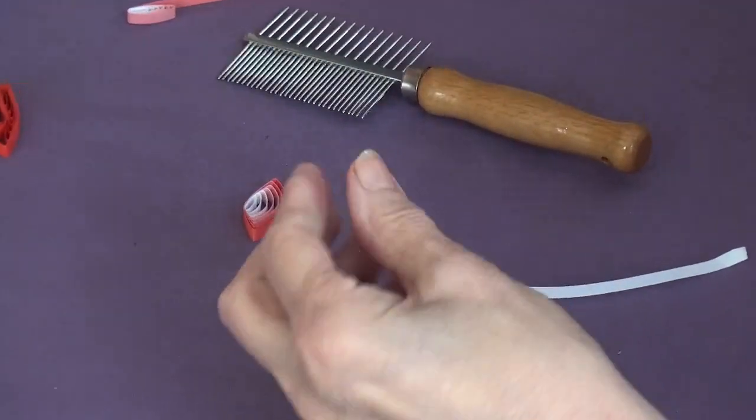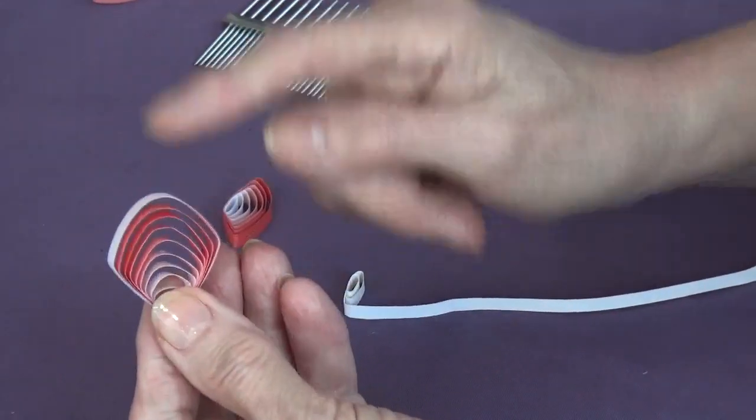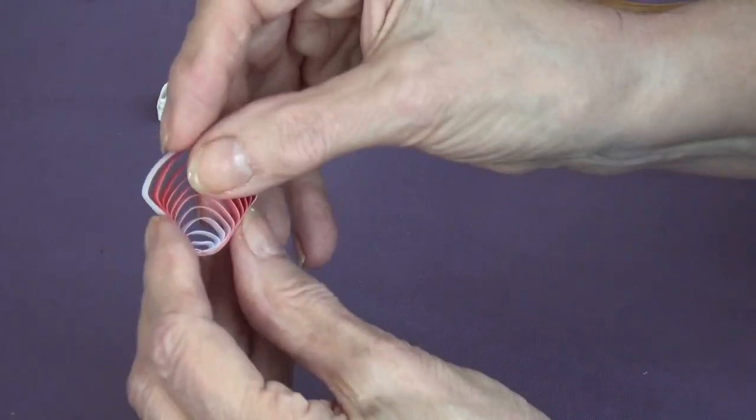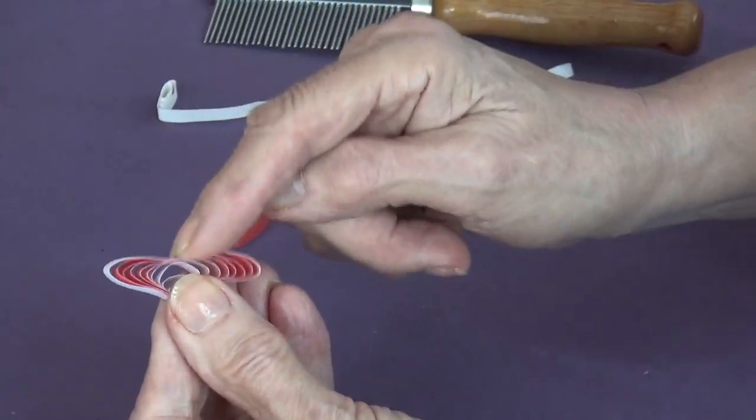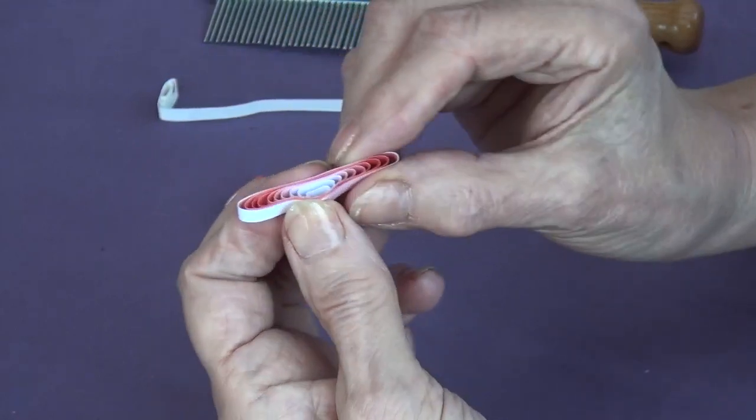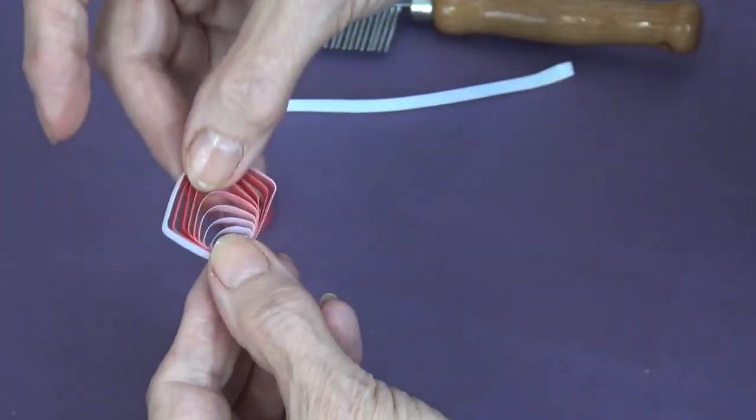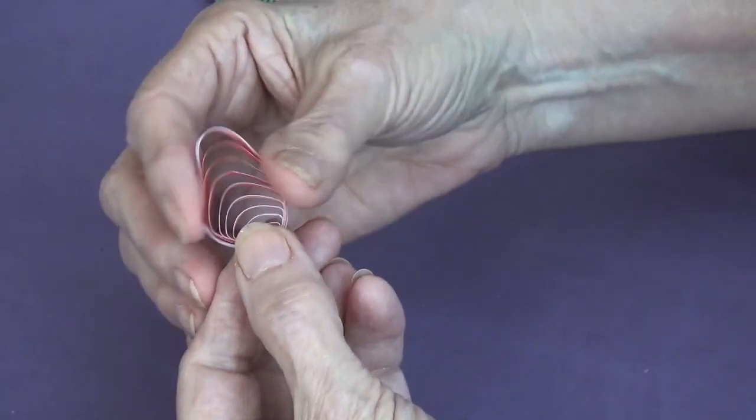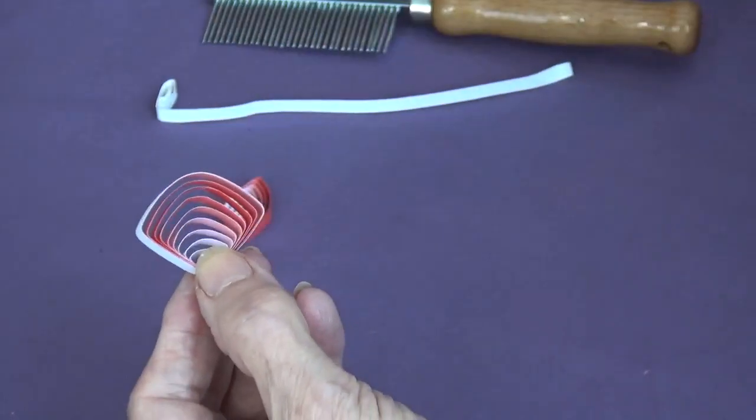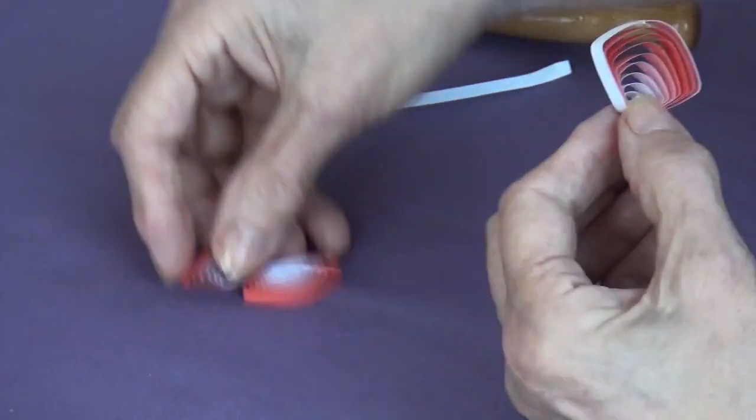So if you keep going, of course, you're going to make something like that. And then, then you can, when you've taken it off the comb, you can start reshaping it as you like. We'll have started like that. And then I've pulled it in this direction and squeezed it a bit and reshaped it. All depends what sort of shape you want.